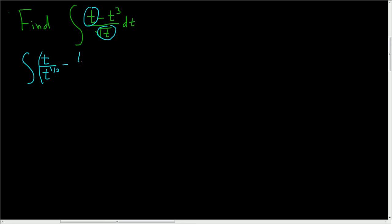And then minus t cubed over the square root of t, which we'll write as t to the one-half. And all of this, we have parentheses and we have a dt.